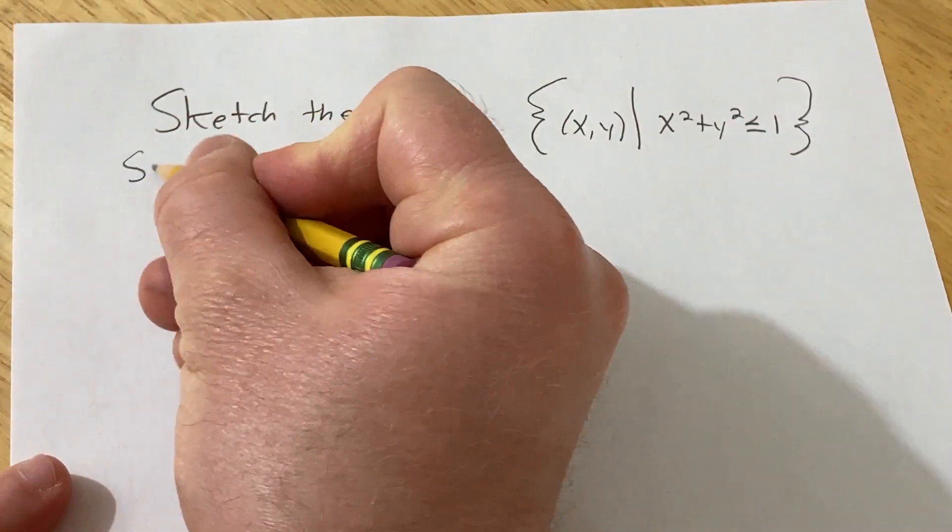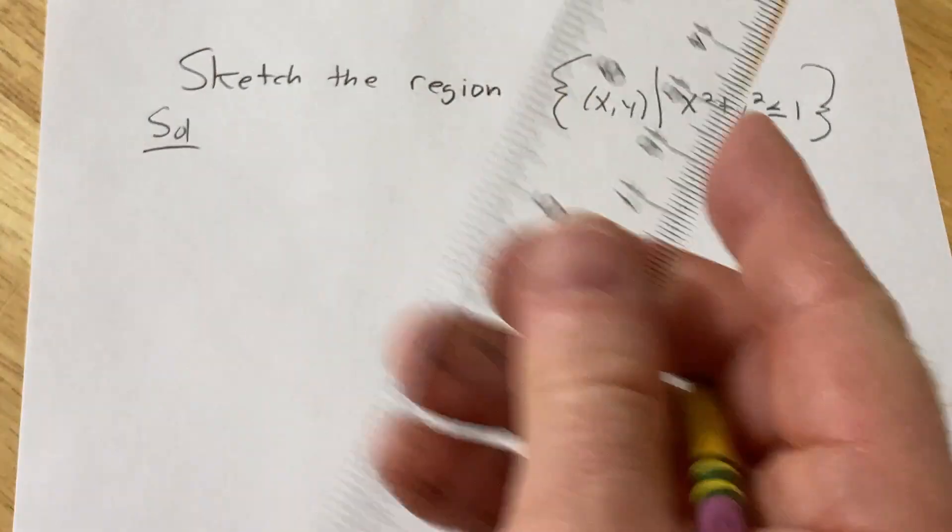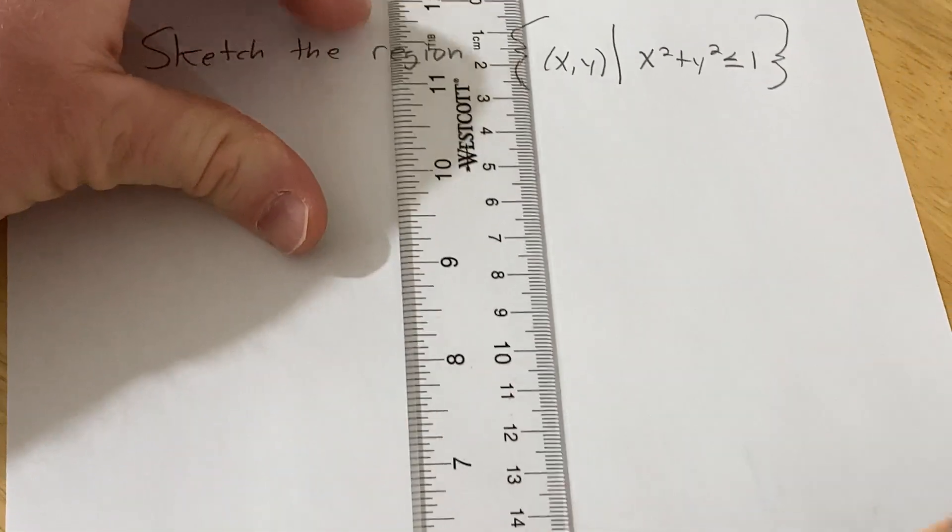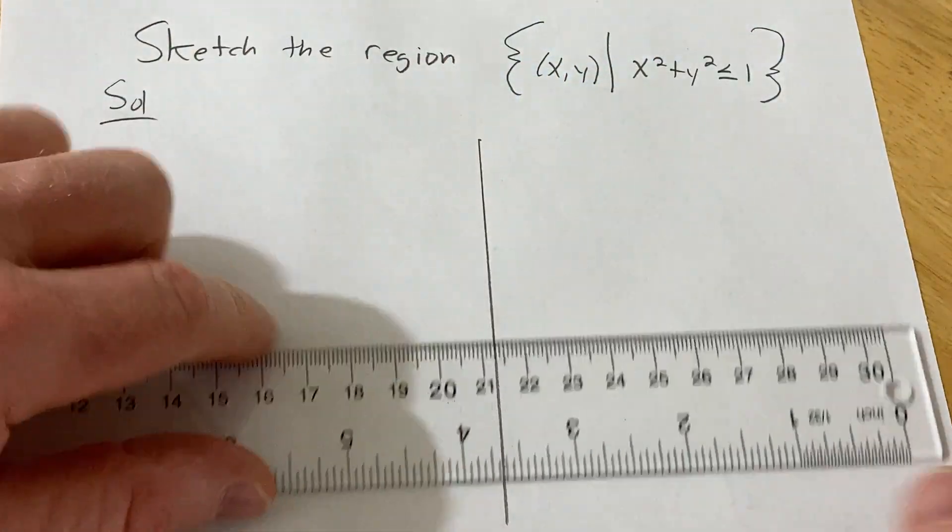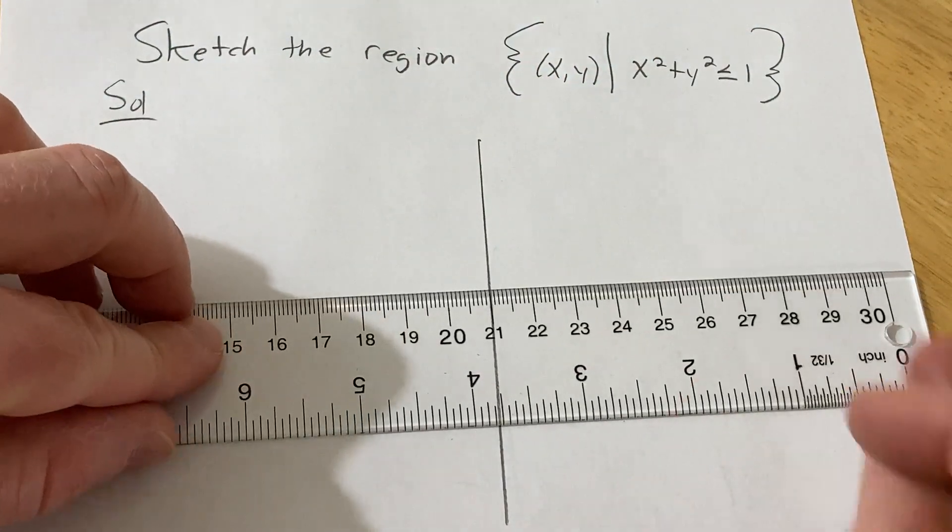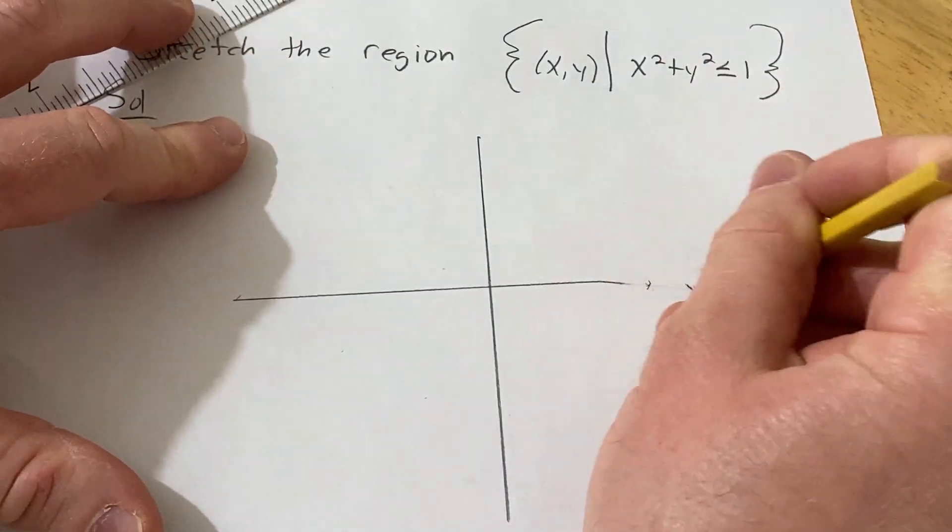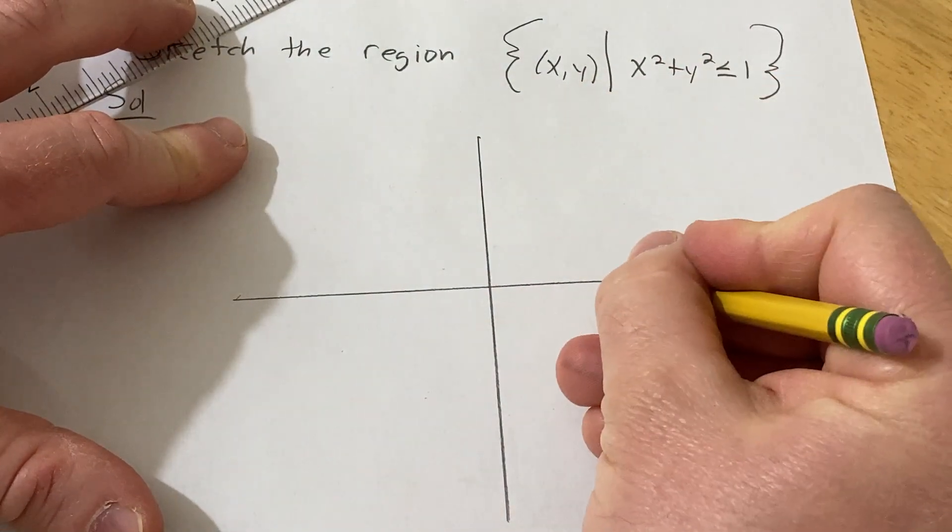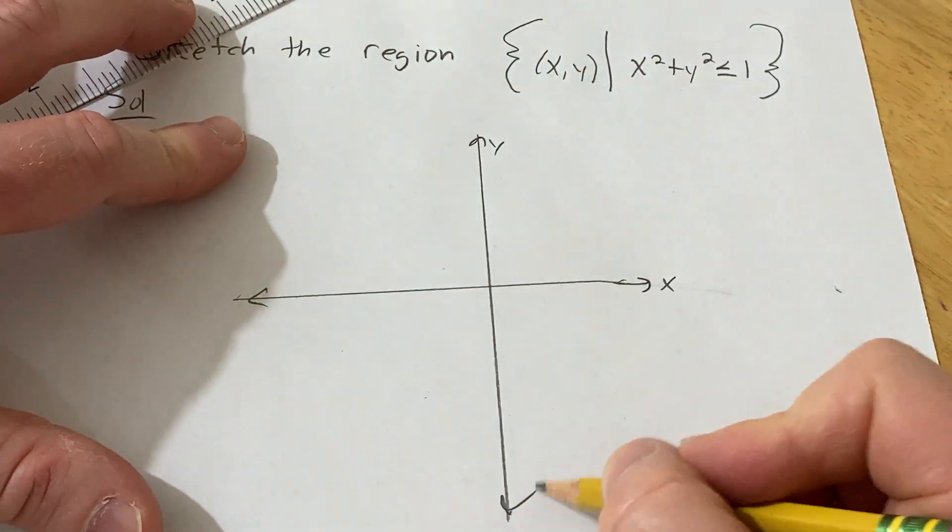Solution. We'll start by drawing the xy plane. So I'm going to use my ruler here to do that. So here's the y-axis and then here will be the x-axis. Whoops, so much for a ruler. So there we go, x, y, and draw our little arrows here.